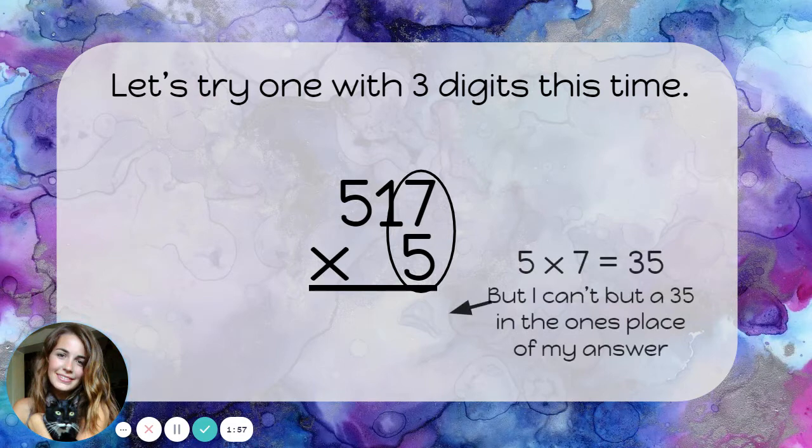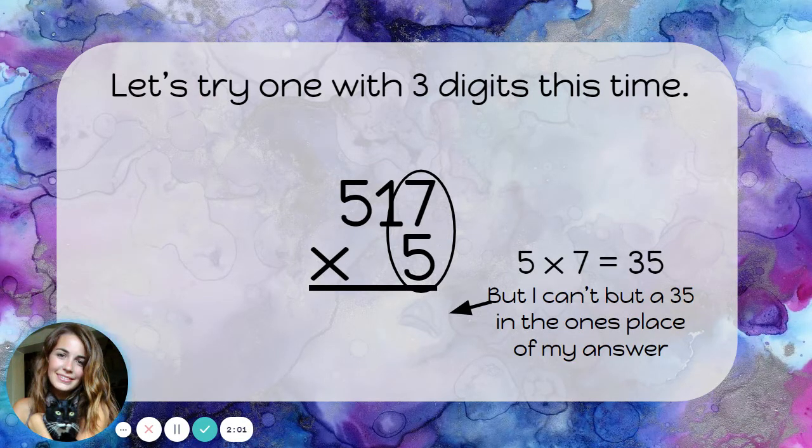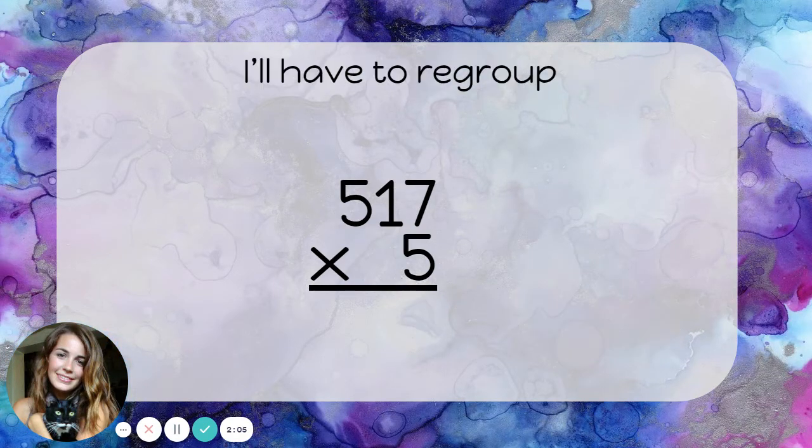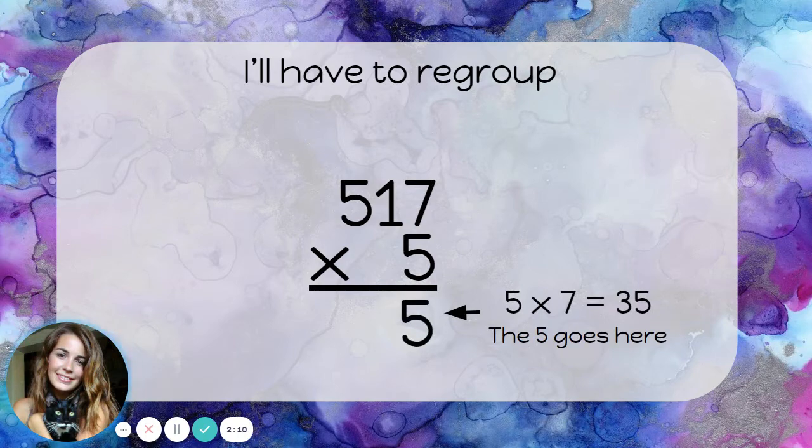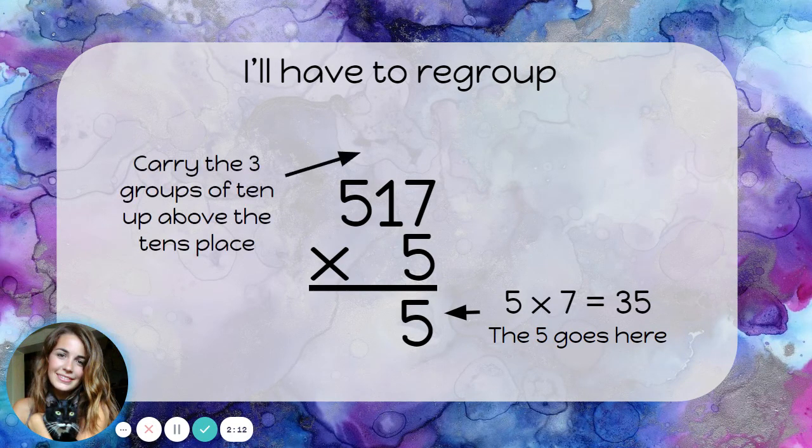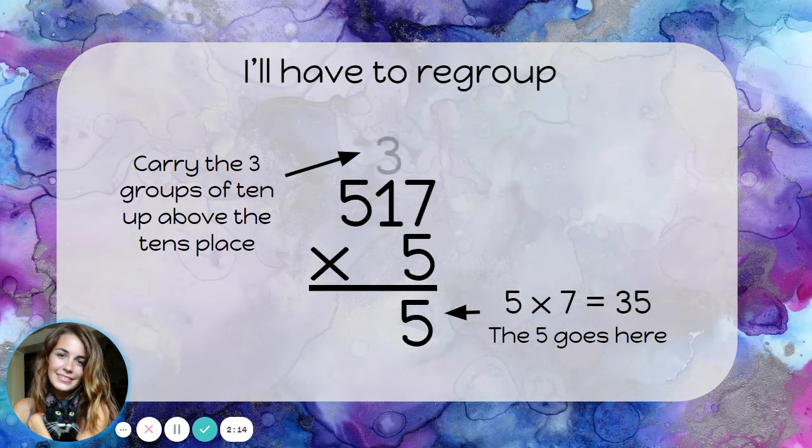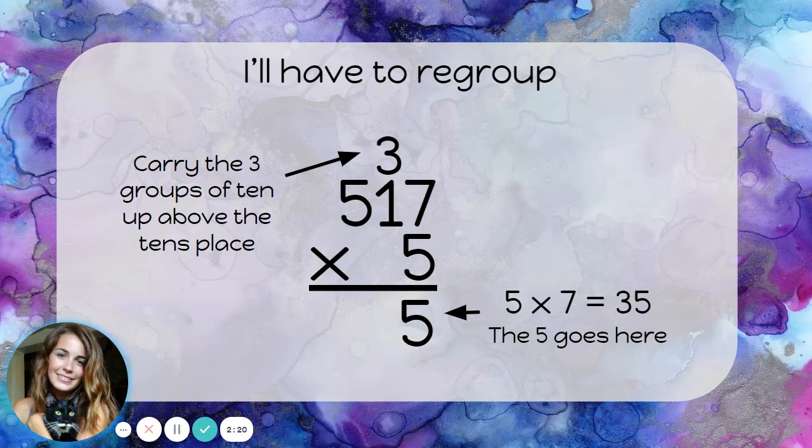5 times 7 is 35. But I know I can't put a 35 in the ones place of my answer. I'm going to have to regroup. So, I'll put down the 5, and I'll carry that three groups of 10 up above the tens place. The 3 in 35 represents three groups of 10, and those tens need to be with the other tens.